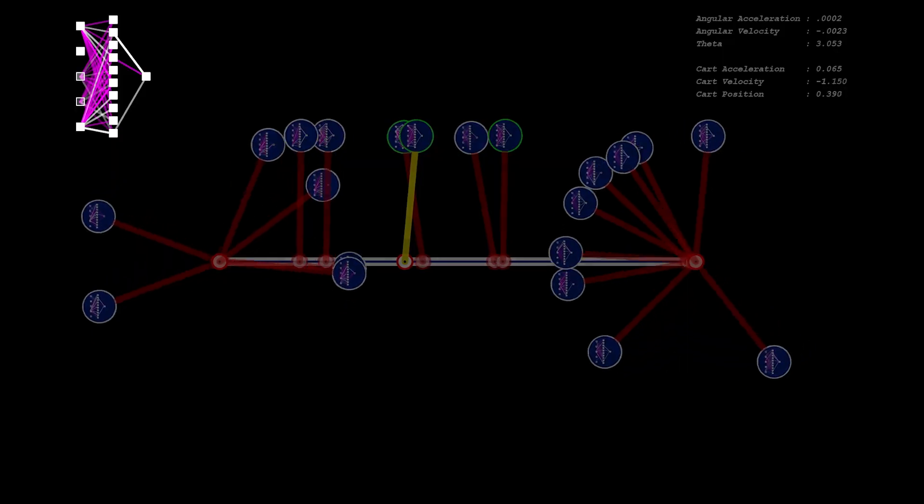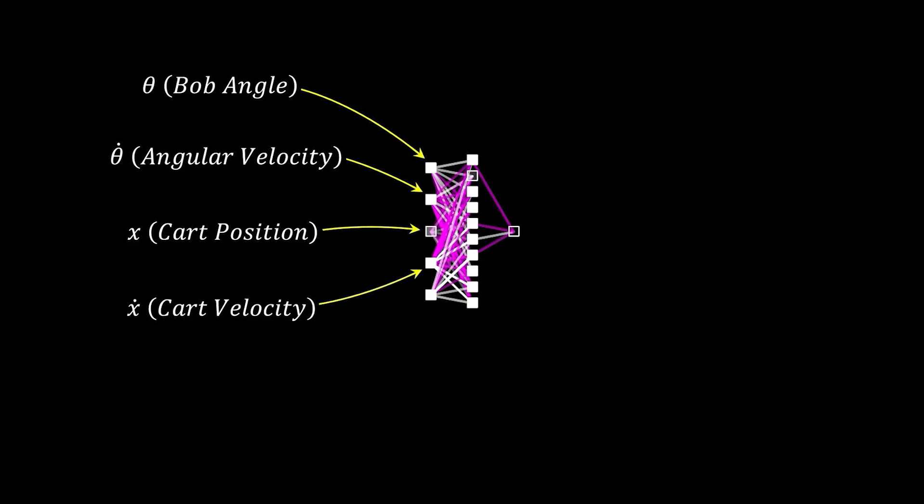Up on the left is the network of the fittest member of the population. It has five input neurons, ten hidden nodes and one output neuron. The input neurons cover the angle of the bob to the normal in radians, the angular velocity of theta, the cart or anchor position on the track expressed as a value between zero and one, zero being the left most edge and one being the right edge, the velocity of the cart and finally whether or not the pendulum is in the right spot with the right orientation.